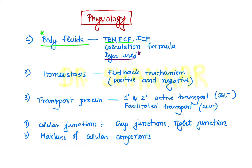The second important topic is homeostasis. You have to know what is positive feedback regulation, what is negative feedback regulation, and what is feed-forward regulation. You should know all the types of regulations of homeostasis with examples of each. Another important thing is problem-based questions in homeostasis, which is important for the INICT exam. A few years ago in the AIIMS examination, there was one question regarding homeostasis — a problem-based question about calculation of correction factor.